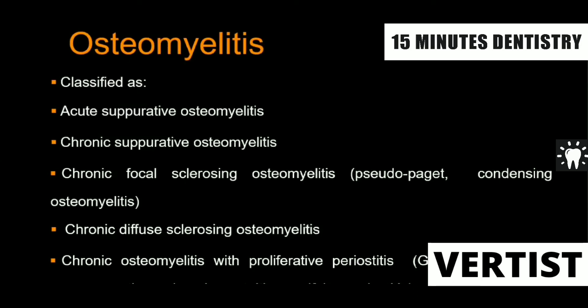The clinical features of osteomyelitis include non-vital tooth, hard swelling, intraoral and extraoral swelling, and mainly the presence of multiple sinuses. In osteomyelitis there will be dead bone called sequestrum. This sequestrum has to be removed from the body, and for that there will always be multiple sinuses in chronic osteomyelitis. The classification includes: acute suppurative osteomyelitis, chronic suppurative osteomyelitis, chronic focal sclerosing osteomyelitis (already seen), chronic diffuse sclerosing osteomyelitis (more common in older patients), and Garré's osteomyelitis, which is very rare.